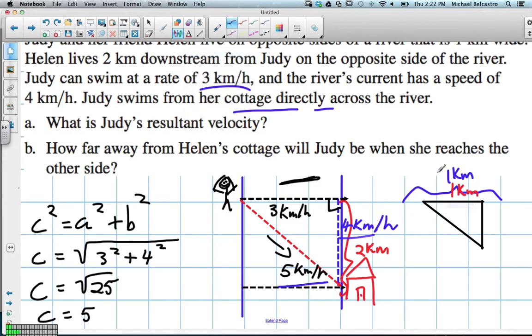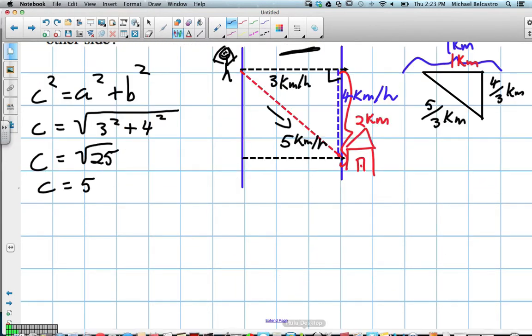So over here, we have 4 divided by 3. So we have 4 over 3 kilometers is the distance she gets. And 5 over 3 kilometers is the new distance she gets. So those actual distances, using our calculator here.